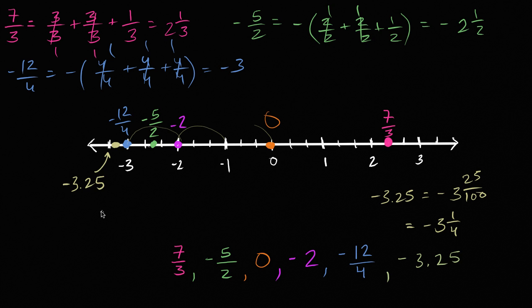So we wanted the numbers ordered from least to greatest. Well, we've done that. The least is negative 3.25, then negative 12 fourths, then negative 5 halves, then negative 2, then 0, then 7 thirds. And we are done.